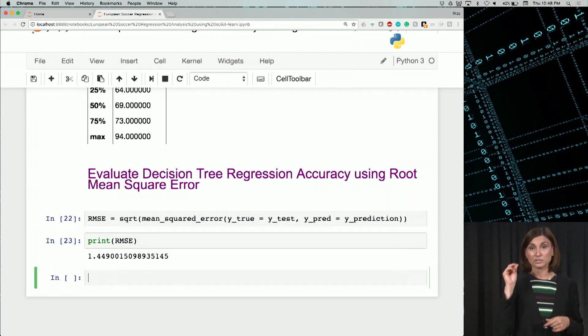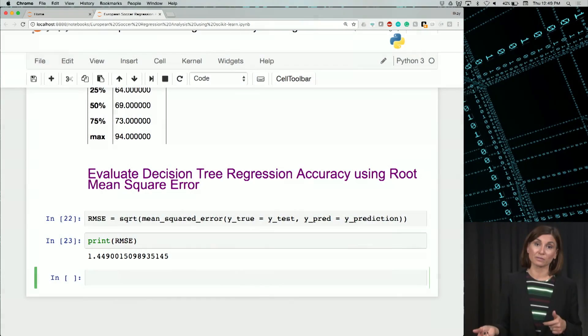Again, the RMSE captures variance of the predicted value from the actual value by our system. So it is a measure of how well a model performs. So I'd say an RMSE of 1.44 for a test set that has a mean of 68 for the target variable is pretty good. And the model never got a chance to look at the test set before the prediction.